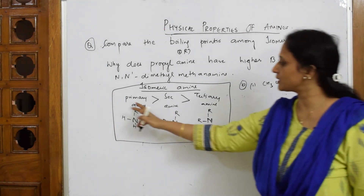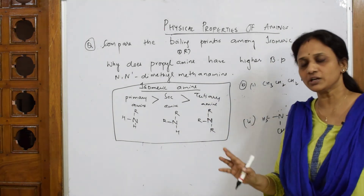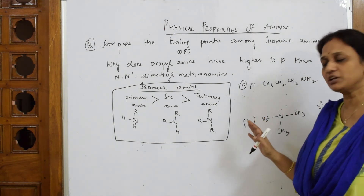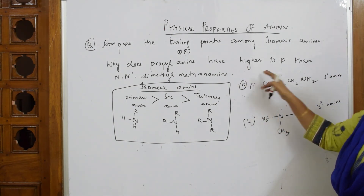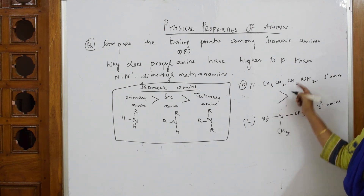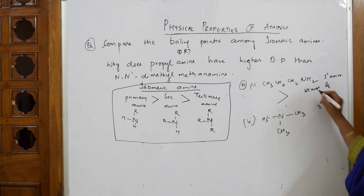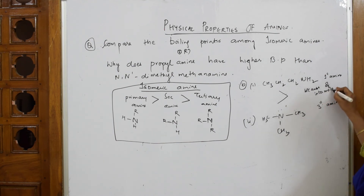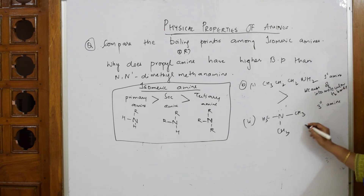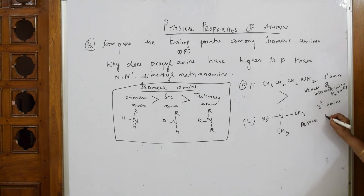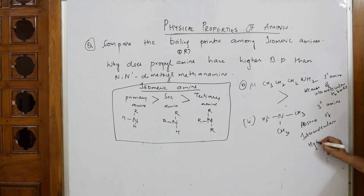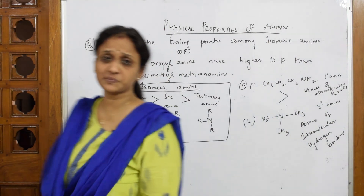As we said, primary amine has two sites for hydrogen bonding so it has a higher boiling point, while tertiary amine doesn't have any hydrogen to form hydrogen bonding so it has a lower boiling point. Propylamine will have more boiling point compared to NN-dimethylmethanamine. The reason is: because of intermolecular hydrogen bonding in propylamine, and absence of intermolecular hydrogen bonding in NN-dimethylmethanamine.